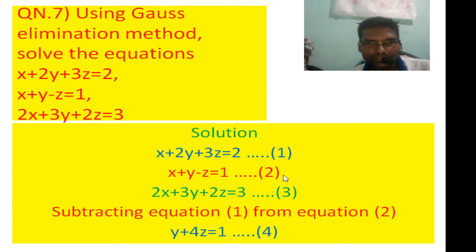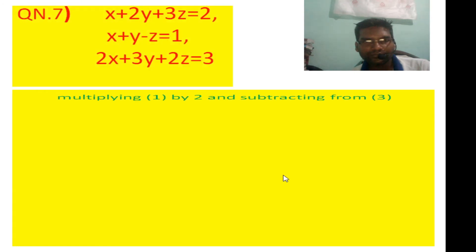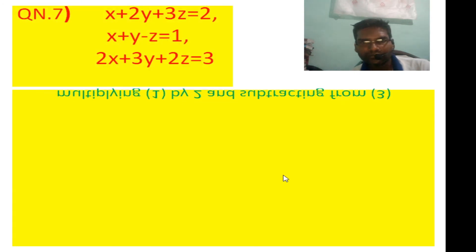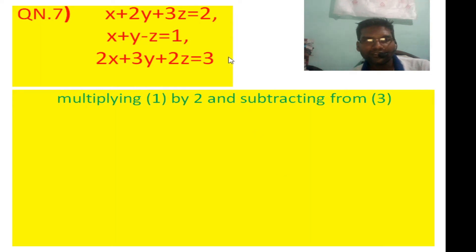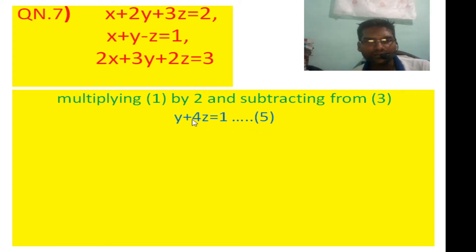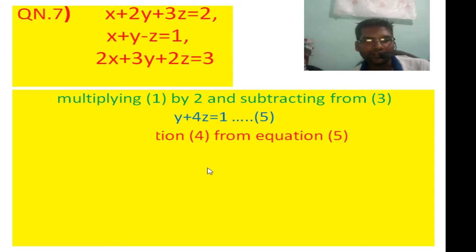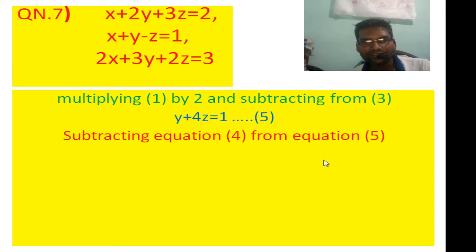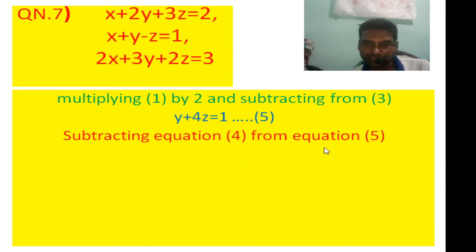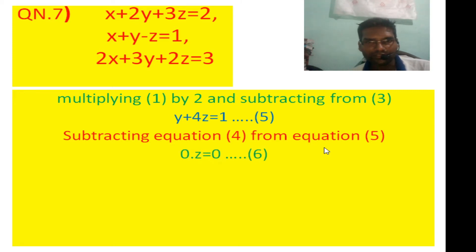In the second step we subtract equation 3. After applying row operations and subtracting, we use equation 4 along with equation 5. The result gives 0 equals 0, which means a single free variable remains.